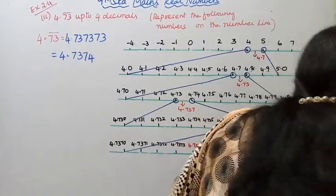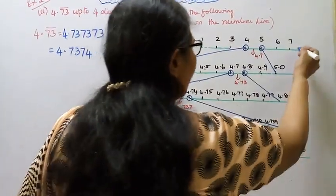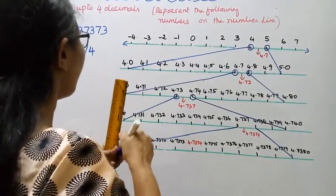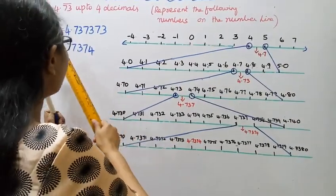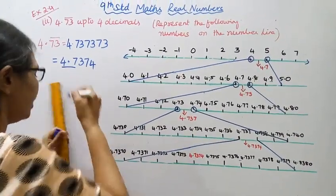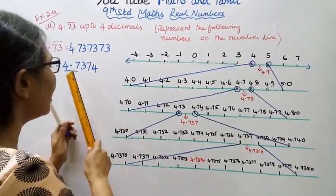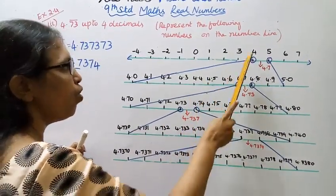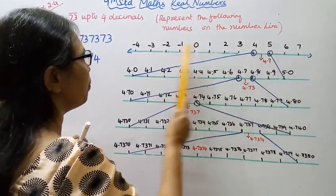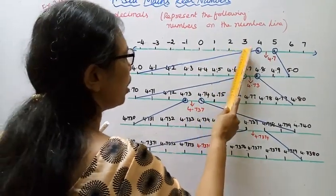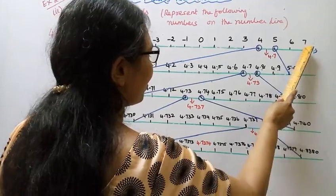First, draw the number line. Minus 4, minus 3, minus 2, minus 1, 0, 1, 2, 3, 4, 5, 6, 7. 4.73 will fall between 4 and 5.